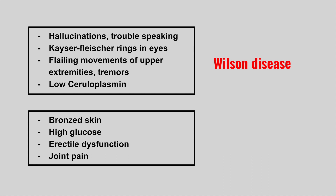The next patient is going to have bronze skin, a high glucose level, erectile dysfunction, and joint pain. This is hemochromatosis, due to iron overload in the body. Look out for what we call bronze diabetes — tan skin with newly diagnosed diabetes — plus gonadal atrophy and joint pain.